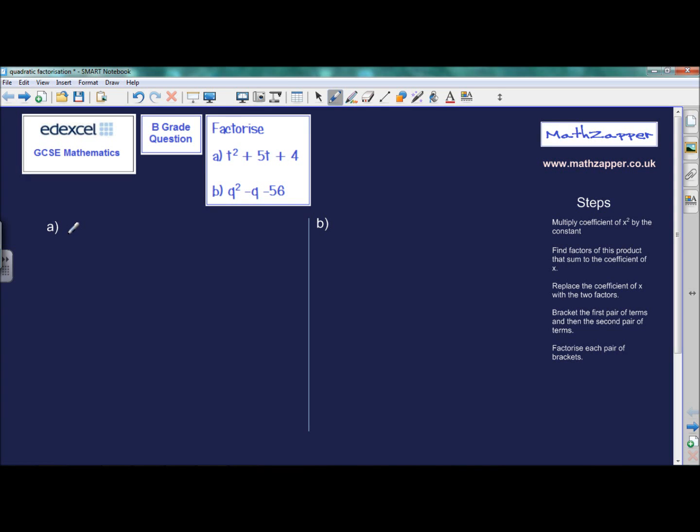Edexcel GCSE Mathematics, example of a B-grade question. Factorize the two quadratic expressions: a) t squared plus 5t plus 4, and b) q squared minus q minus 56.